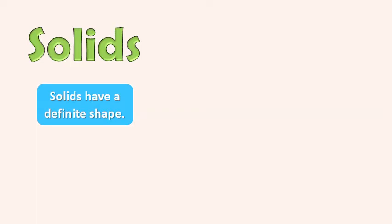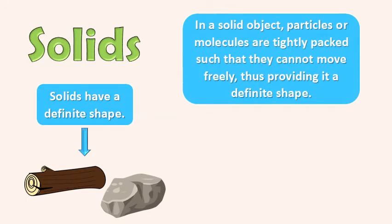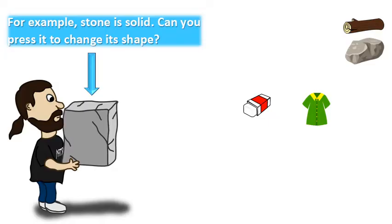Solids have a definite shape. In a solid object, particles or molecules are tightly packed such that they cannot move freely, thus providing it a definite shape. For example, stone is solid. Can you press it to change its shape? No, because it is hard.